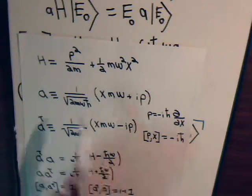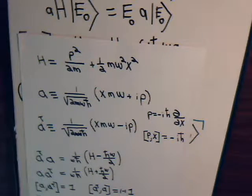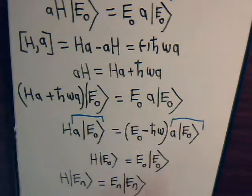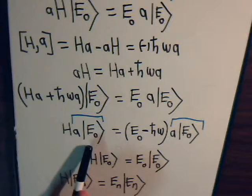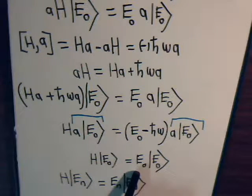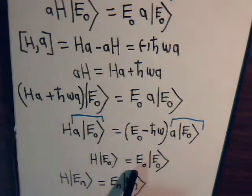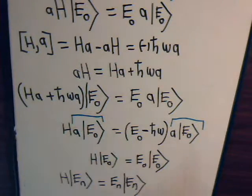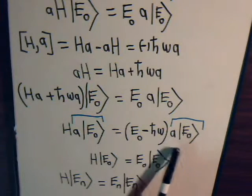So the operator A is an energy lowering operator, or sometimes it is called the annihilation operator. Now when we have it operating here with the ground state where this is the lowest possible value that exists, then yes, for this particular equation it only has the trivial solution, so this has to be zero.